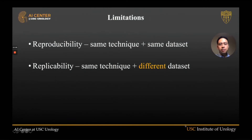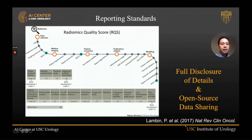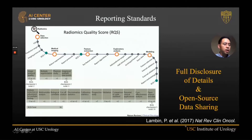There are limitations to AI-based studies: Can you reproduce the results using the same technique and even the same data set but from different investigators? Can you replicate results using the same technique but a different data set and different investigators? We believe the future of AI-based studies must adhere to CERN reporting standards — full disclosure of all details utilized — and ideally open-source sharing of data.